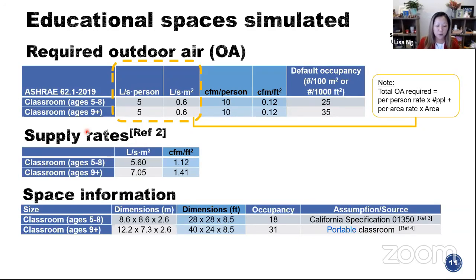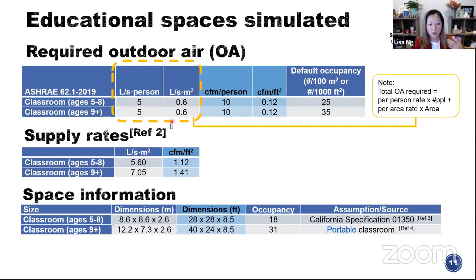We took ventilation rates from ASHRAE 62.1-2019 — the ventilation standard for commercial buildings — and looked at two classrooms: one for younger kids ages five to eight and one for kids ages nine plus. Their liters per person and liters per square meter criteria are the same; the only difference is that the default occupancy is different — there are more people in the ages-nine-plus classroom. The total required outdoor air ventilation rate is a per-person number times the number of people plus a per-area number times the area. We also found typical supply rates in ASHRAE 62.1's informative annex, though these are not required. The two spaces are based on a California specification for emissions and a portable classroom in an ASHRAE journal.